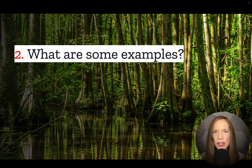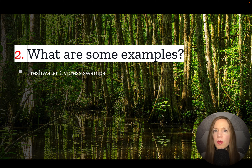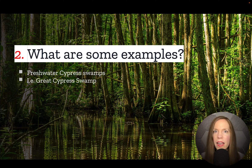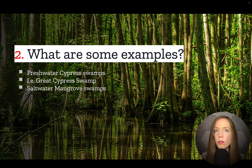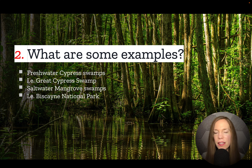Number two: what are some examples of swamps? Cypress swamps are one of the most common types of freshwater swamps. A great example is the Great Cypress Swamp in Florida. There are also saltwater swamps, mangroves being one of the most common examples, and again in Florida, you have another great example of a mangrove swamp in Biscayne National Park.